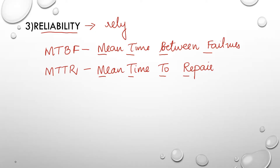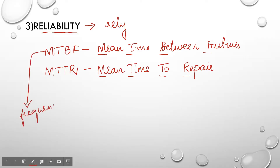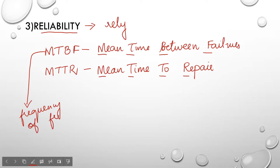MTBF is the frequency of failures in hours, weeks, or months. For example, you have a system that failed this week. You correct it, reinstall the system, and again in the next week there is a failure. So MTBF defines the frequency of failures — it can be in weeks, months, or years.